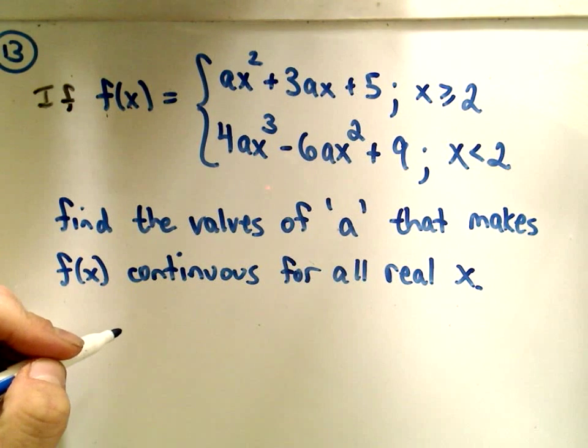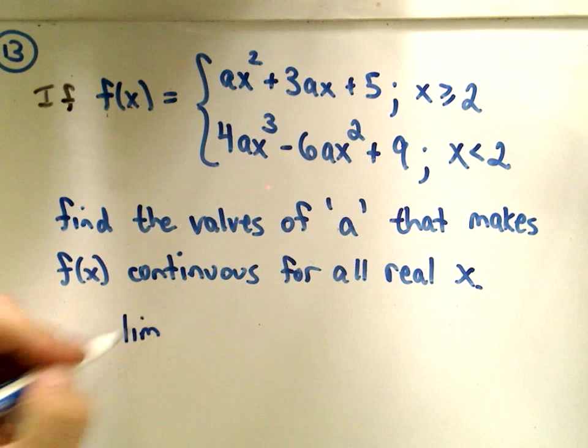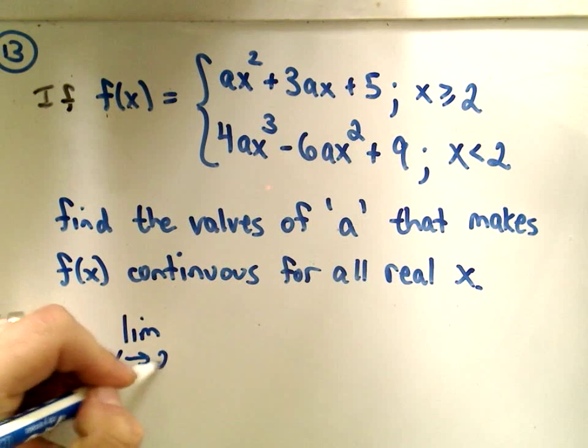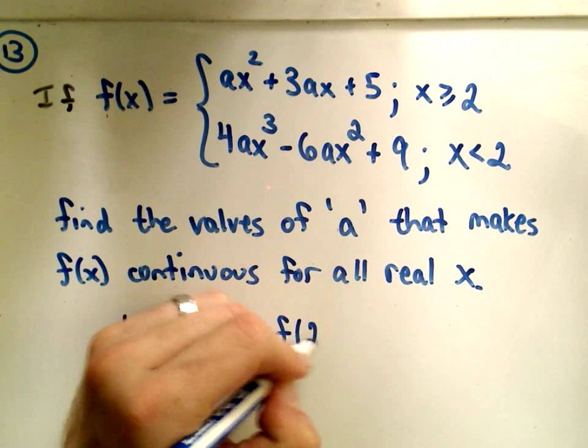And remember for the function to be continuous at x equals 2, we just have to satisfy the limit as x approaches 2 of our function f of x. That simply has to equal f of 2.